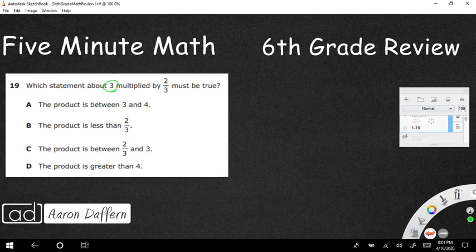So what we have here is we've got three multiplied by two-thirds. So we're going to say three multiplied by two-thirds. And I don't even want you to know what the answer is. I just want you to know, is it going to be between three and four? Is the product going to be less than two-thirds, between two-thirds and three, or greater than four?